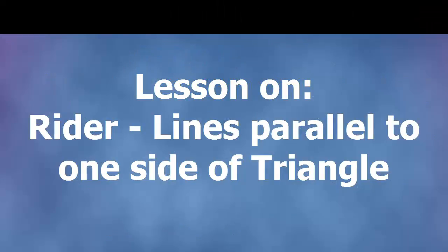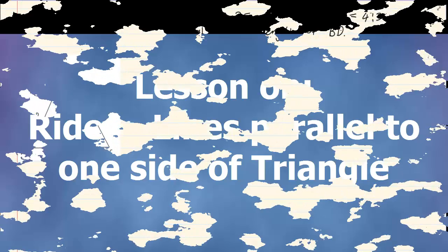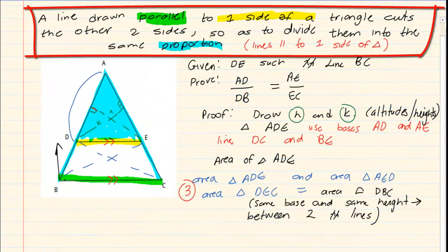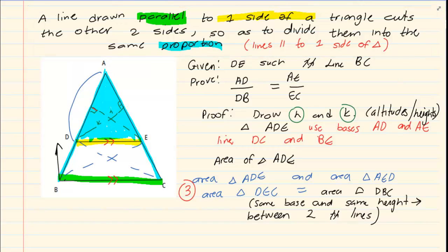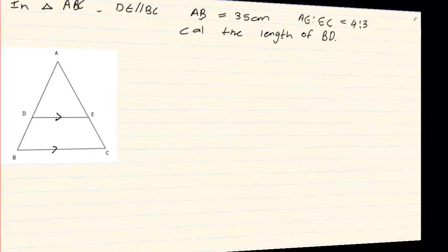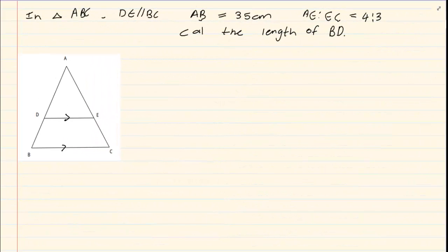Hi and welcome to my maths class. Today we are going to discuss riders that are linked to the theorem that states a line drawn parallel to one side of the triangle cuts the other two sides so as to divide them in the same proportion. When we are using them in riders, if we see a triangle with parallel lines, immediately you can see that the sides are in proportion.